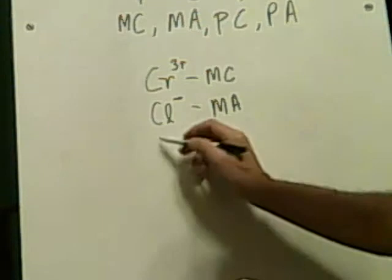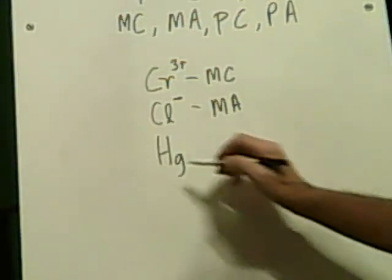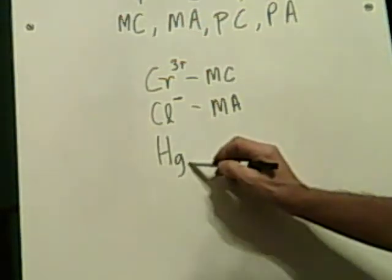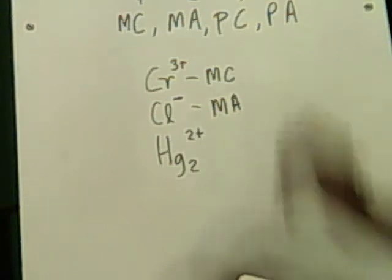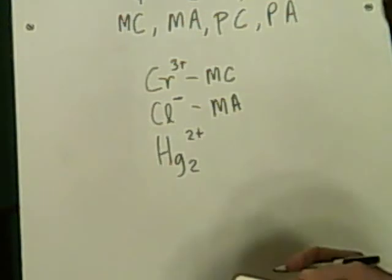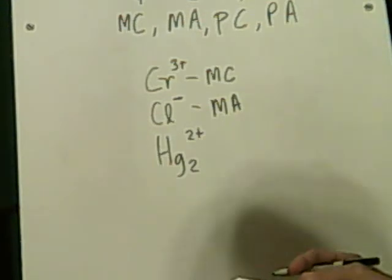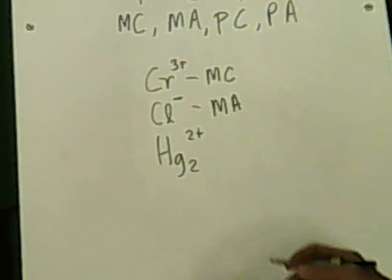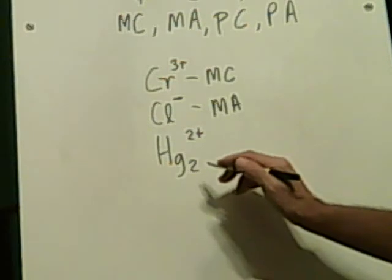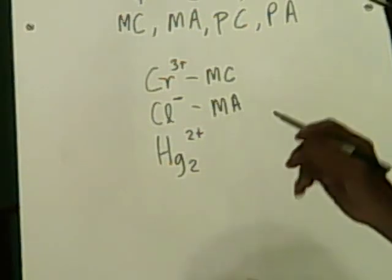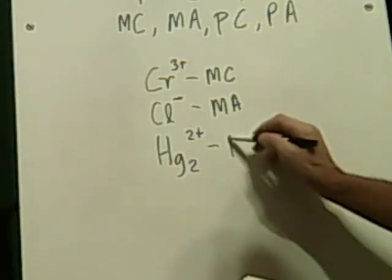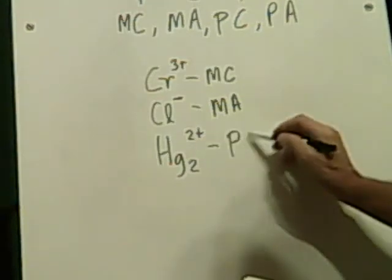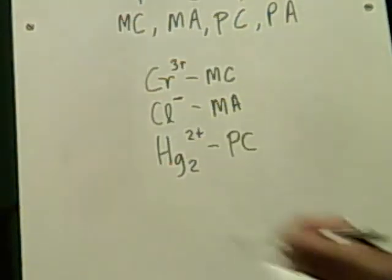Number 3 is mercury, Hg — on this one it's 2 and it's plus 2. Mercury is a metal, and in this case you can tell that this is polyatomic because there are two of them. So I'm going to go with polyatomic cation, because it's positive.